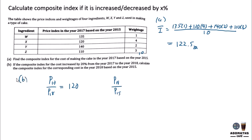We are required to find the composite index for 2018 based on 2015. To do this, we use the chain rule method. We have the composite index of 2017 based on 2015, so 2017 appears on both sides of the chain.